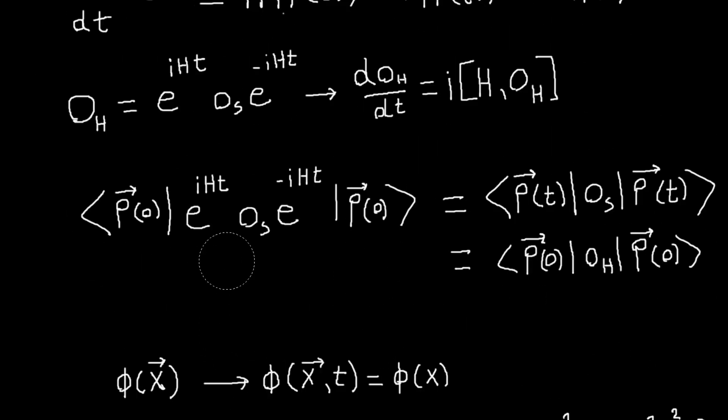So our goal here is to change, is to go from our Schrödinger operators, which are our fields that depend only on the spatial coordinates, and transform those to Heisenberg operators that depend on time as well. And for our three vectors, we've been using these arrows. For four vectors, we're just going to leave them off. So when I say phi of x, I mean x, y, z, and t, not just x.